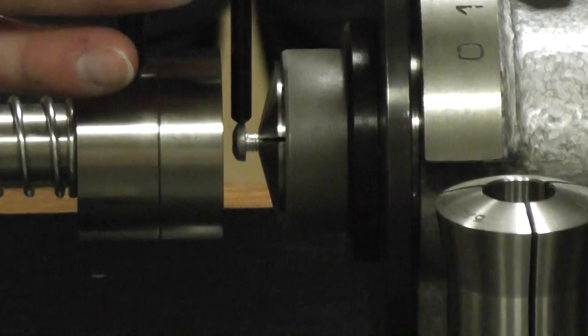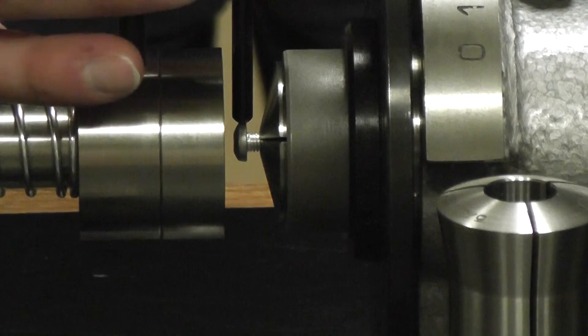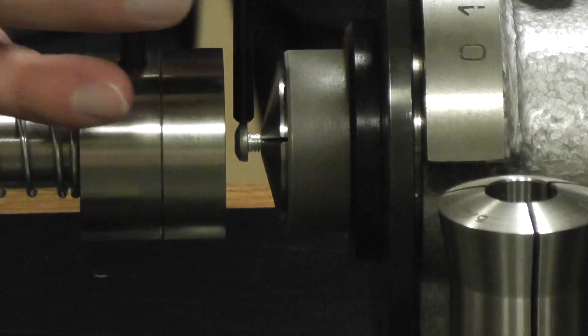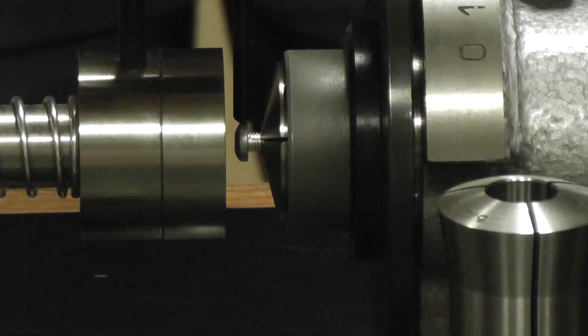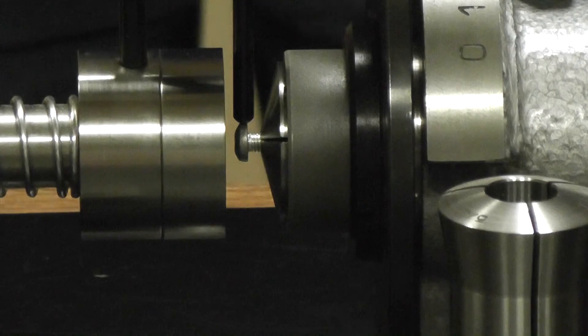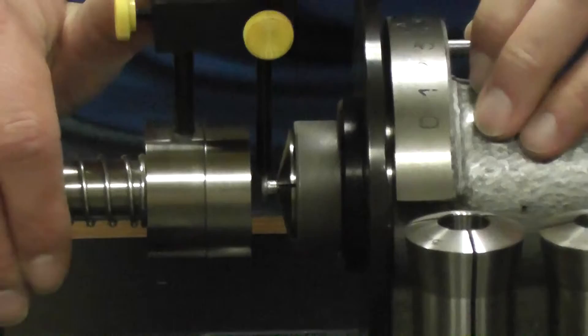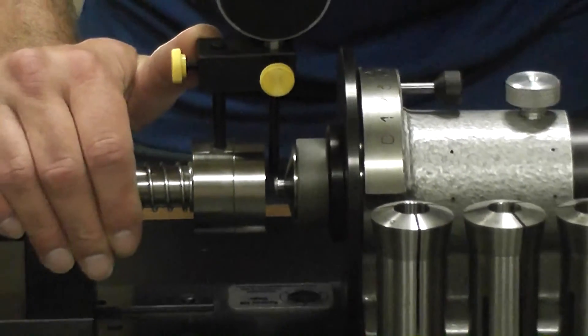And again, we want to be in TIR mode for this. So, we follow the same procedure as last time. Search for the TIR and hit set. And once again, everything is locked into position. We make sure we are unlocked. And we rotate.